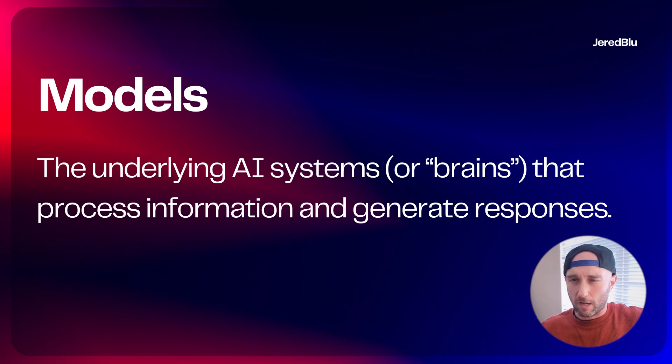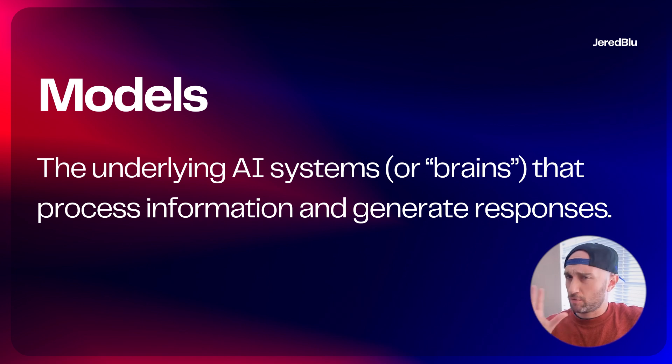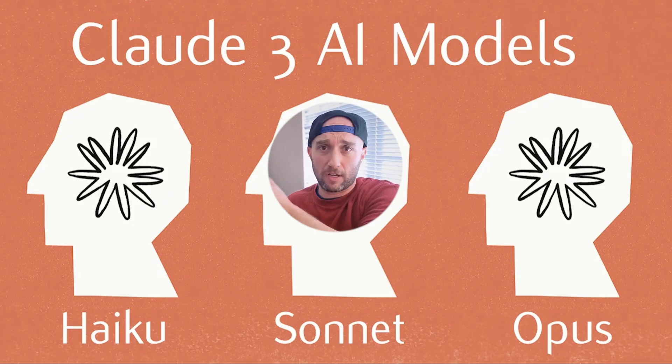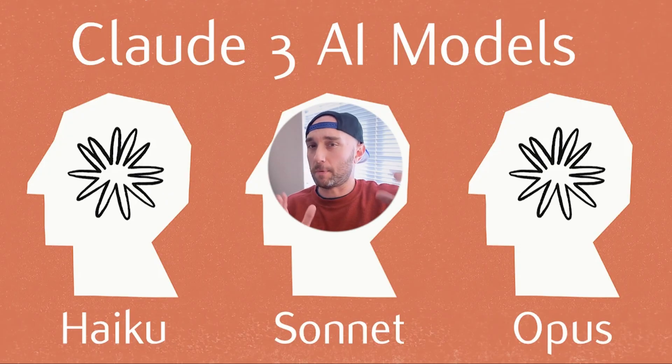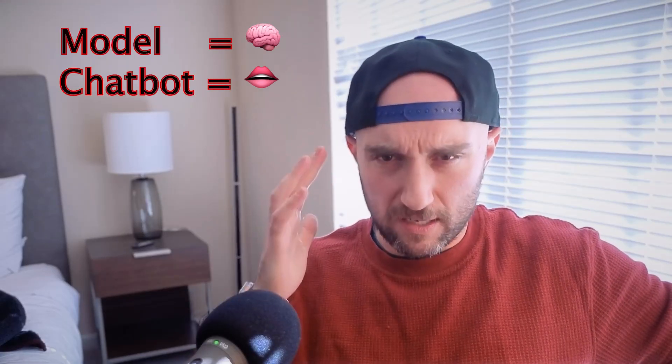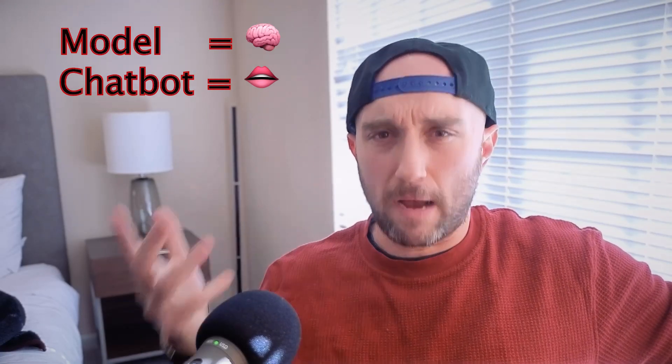So what are models? Models are the underlying AI systems — think of them as the brains. New models are released all the time, and they come in various sizes, often an improvement on the last one, like GPT-3, GPT-4, GPT-4o. With Claude, for example, we have Claude Haiku, which is the small model, Claude Sonnet, the medium-sized model, and Claude Opus, the large model. So think of models as the brains and the chatbots as their mouths.